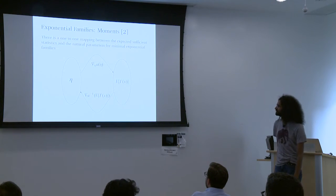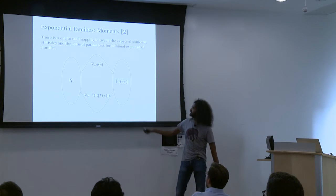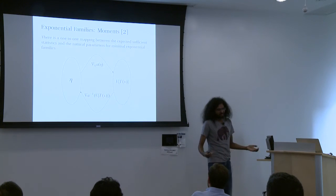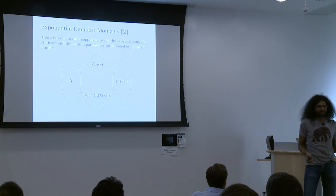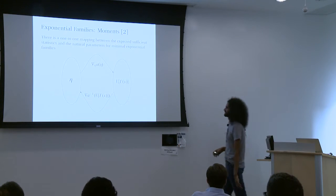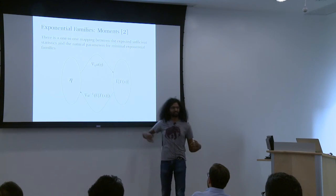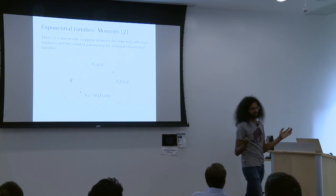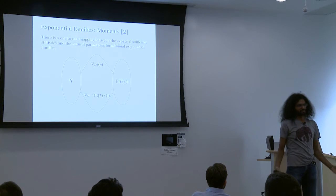Why do we say those statistics are 'sufficient'? Sufficiency has a formal definition, but intuitively: if I know the expected values of those things, that's enough to know the distribution. Between the natural parameters eta and the expected value of the sufficient statistics there's a one-to-one mapping for a certain class of exponential families — and this is why those statistics fully characterize the distribution.